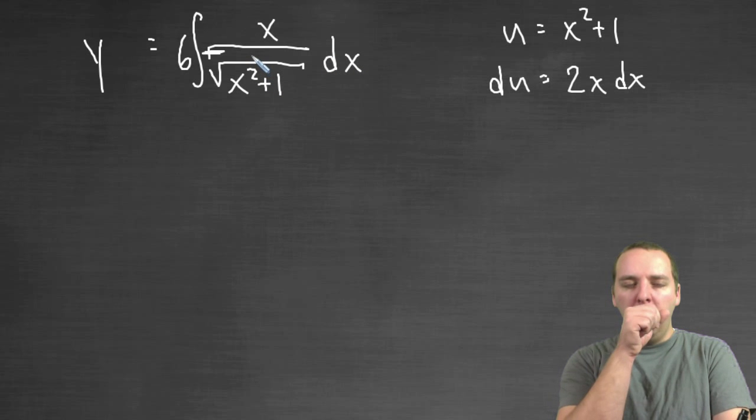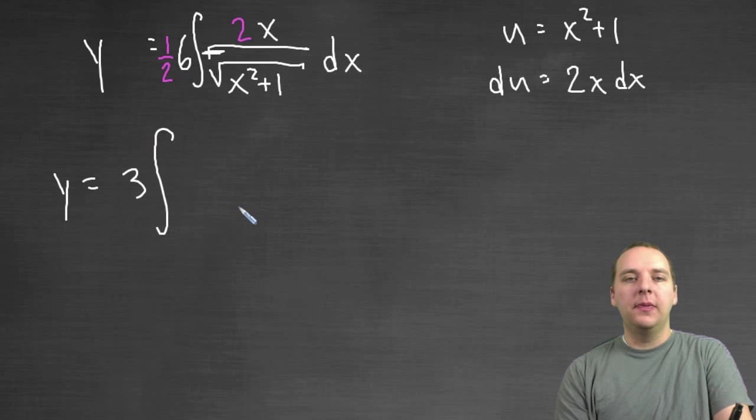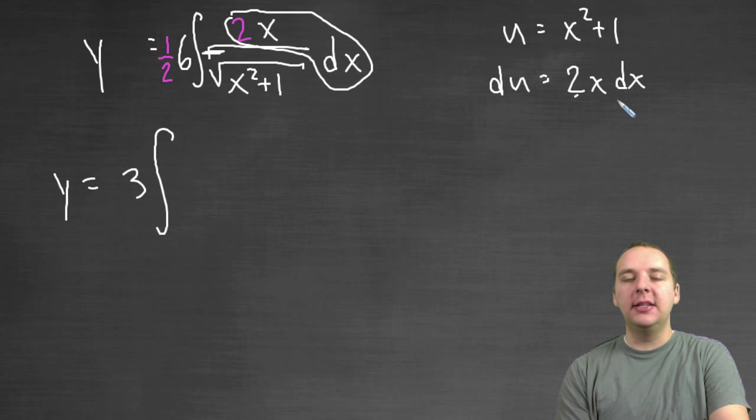This is 1 over the square root of u, which is a good thing. Now I don't have a 2x dx, I only have an x dx. So I will put a 2 in here, because I need one. And I'll put a 1 half on the outside. And so this will be y equals, a half times 6 is 3. And we'd have the integral of the 2, the x and the dx. All that together is equivalent to du. 2x dx is the same as du. So I'll put a du over here.